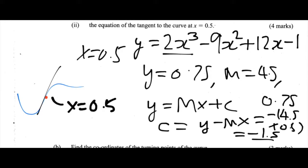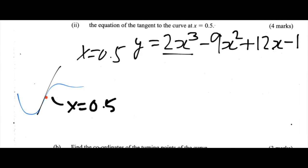So now we have all our values. So let's plug those into y equals mx plus c to get our final answer for the equation of the tangent to the curve. The equation of the tangent to the curve at x is equal to 0.5 is y is equal to 4.5x minus 1.5.